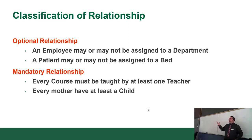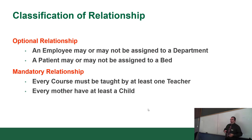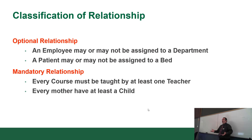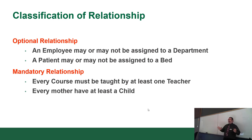Quick refresher on relationships: there are two kinds — optional and mandatory. An optional relationship means an employee may or may not be assigned to a department, or a patient may or may not be assigned to a bed. A mandatory relationship is one that must be enforced — for example, a course must be taught by a teacher. Even in an online course, a teacher was involved in creating it and there is still someone grading those assignments.